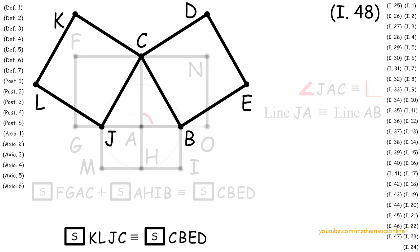Now since both squares are congruent, and by definition of a square all sides are congruent, then line CJ must be congruent to line CB.